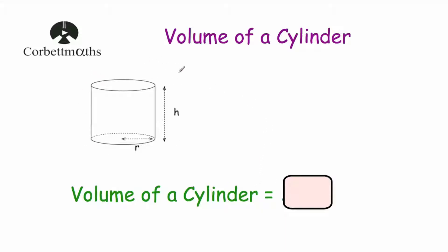So here we've got a cylinder, and before you watch this video, I'd highly recommend you watch the video on Cobra Mavs called the volume of a prism. To find the volume of a prism, you find the area of the cross section and then you just multiply by how tall or how long the prism is. And we're going to find the volume of a cylinder using the same approach — find the area of the circle, the cross section, and then multiply by how tall the cylinder is.